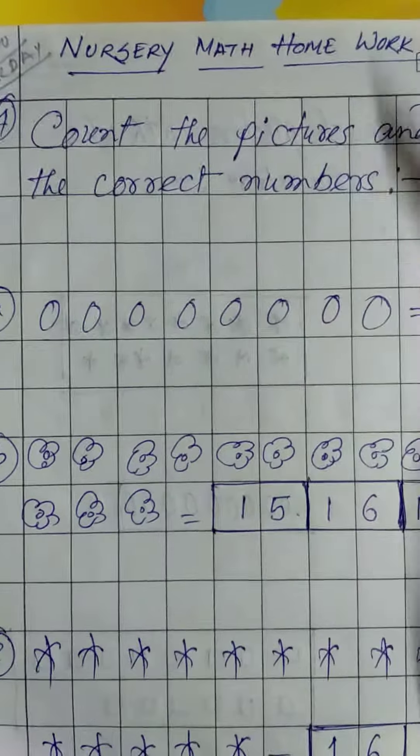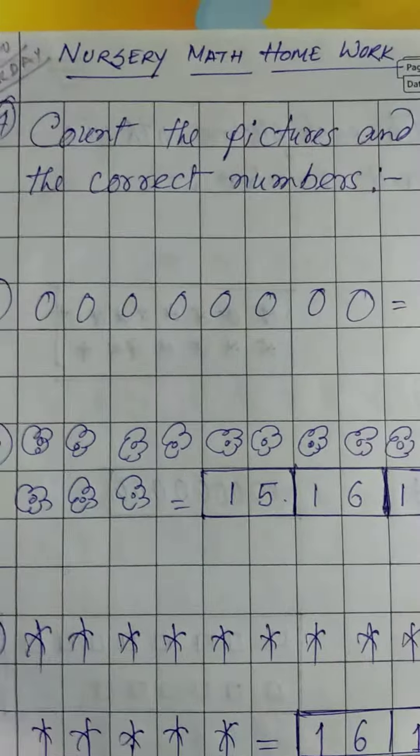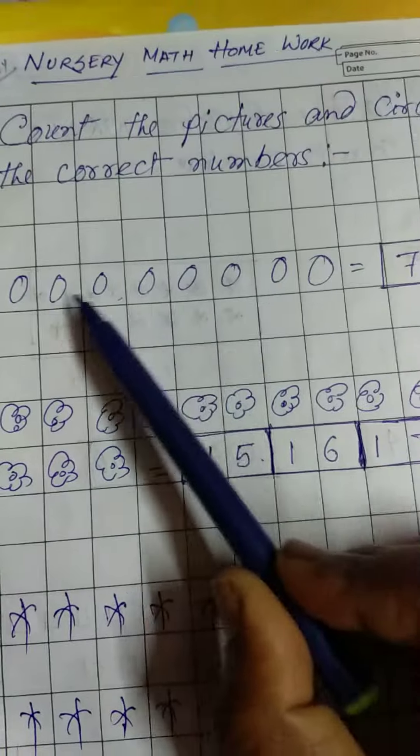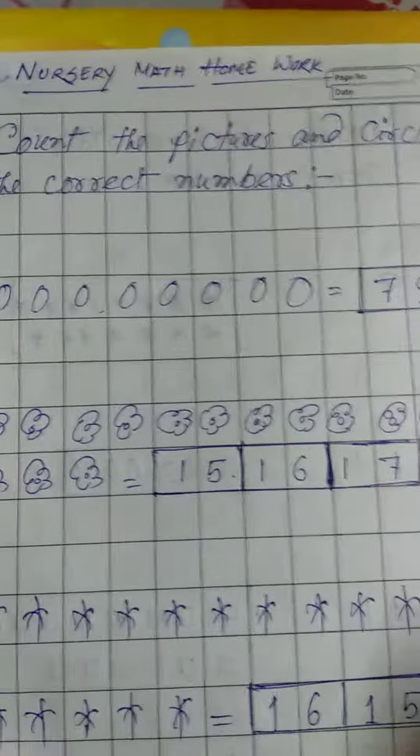Hello everyone, today's date is 22nd of August 2020. It's Saturday and our class is Nursery Math homework class. So we do it today. Count the pictures and circle the correct numbers. Okay, so you have to count the pictures. Here are some pictures, you have to count the pictures and you have to circle the correct number.